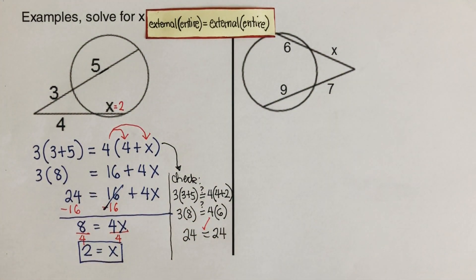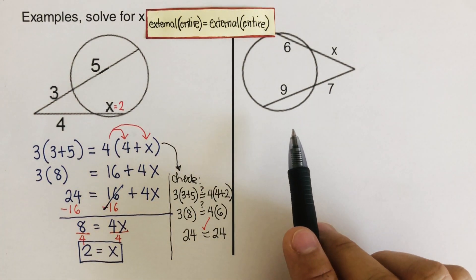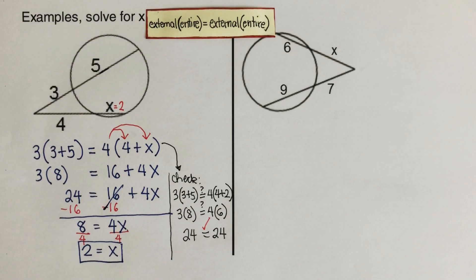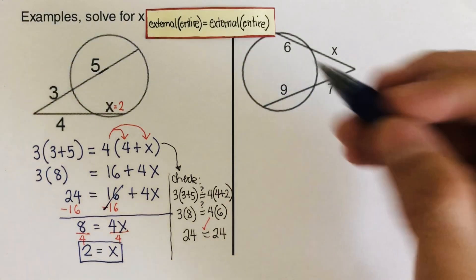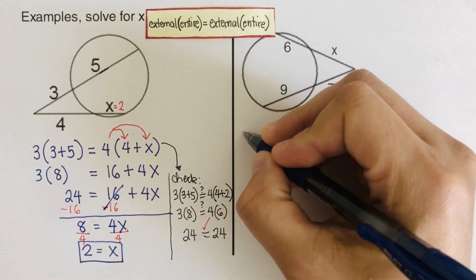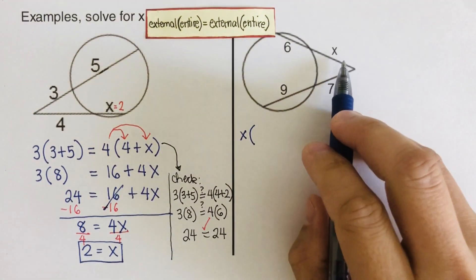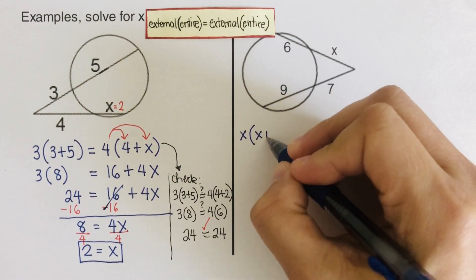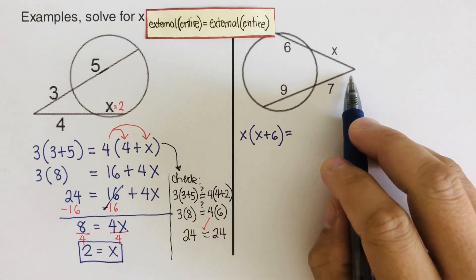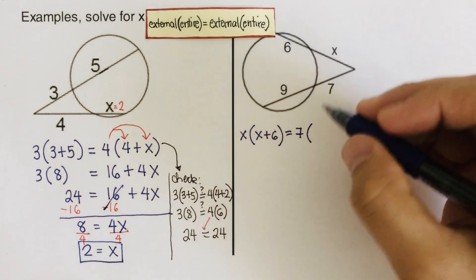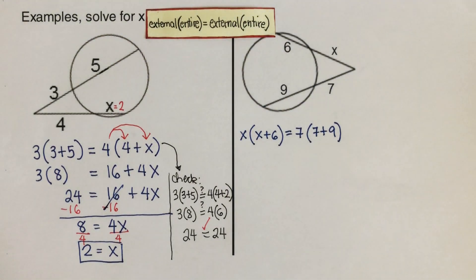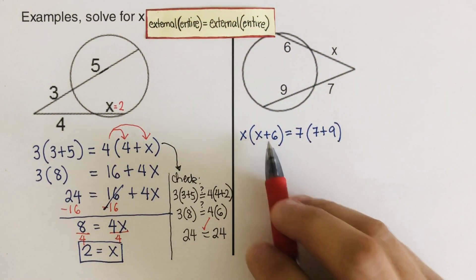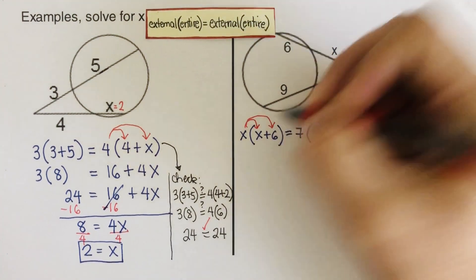At this point I encourage you to pause the video and try the next problem on your own. In this problem we use the same formula. Starting with the first secant: the external is x, times the entire which is x plus 6. For the other secant: the external is 7, times the entire which is 7 plus 9.